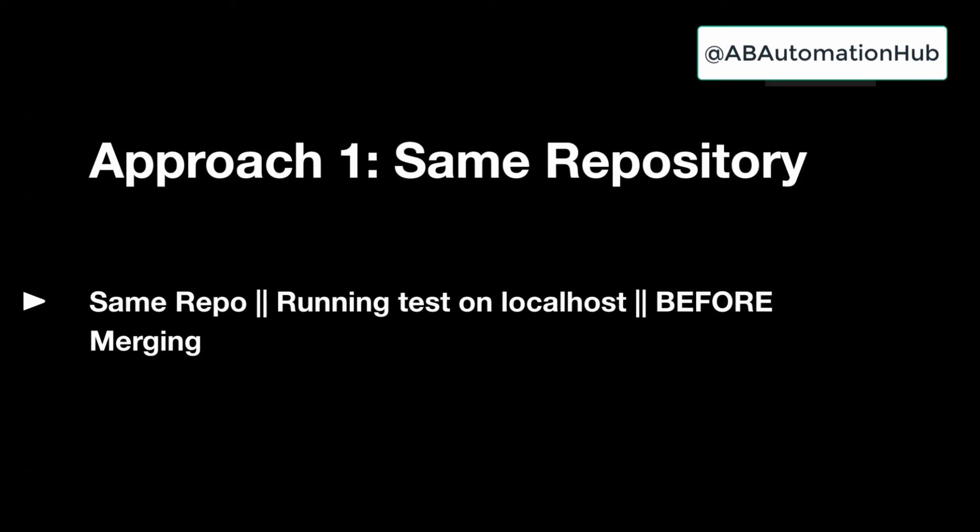The first sub-approach is running tests on your localhost — that is, before merging your code. For example, your dev has raised a pull request with new changes. Before merging your PR into your master branch, you can run your test cases on the localhost and confirm if everything is working fine or not.